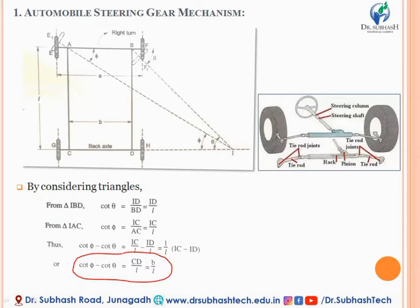This equation, cot φ minus cot θ equals b upon l, is the fundamental equation for correct steering. If this condition is satisfied, the motion of the wheel will be pure rolling and there will be no skidding or slipping of the wheel with respect to the road surface. The mechanisms used for automatically adjusting the values of theta and phi for correct steering are generally known as steering gears.